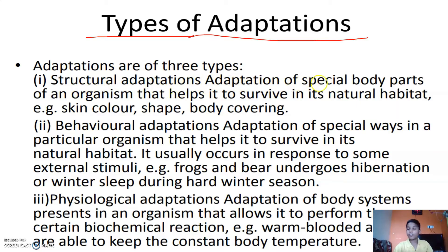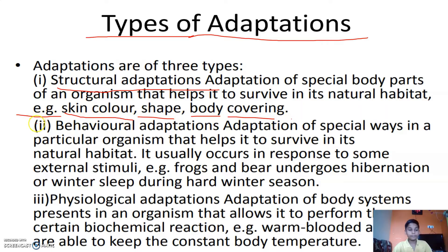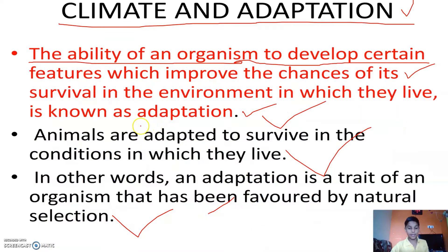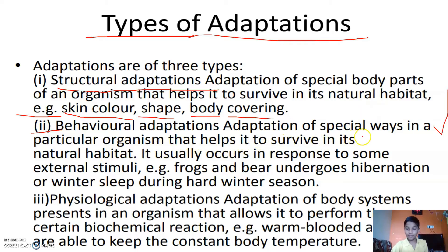How many types of adaptation are there? The first one is adaptation of special body parts of an organism that helps it to survive in its natural habitat — this is called structural adaptation. Examples of structural adaptation include skin color, shape, and body covering.